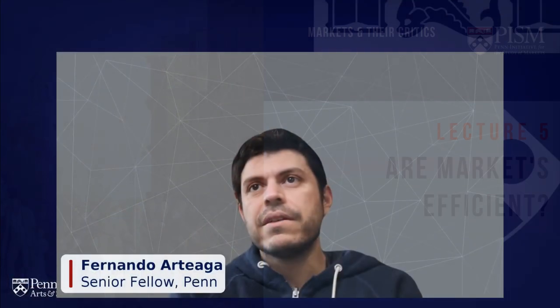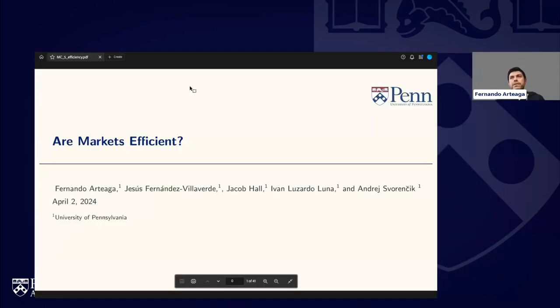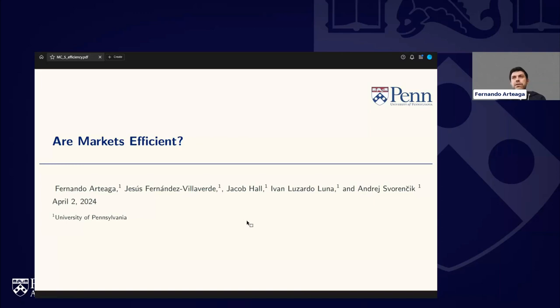We are starting the second part of the sessions, so we are with Jacob again. He is a postdoctoral fellow here at the Pay Initiative for the Study of Markets at the Department of Economics at the University of Pennsylvania. Today he will be presenting on the efficiency of markets and the debates surrounding such a topic, so welcome.